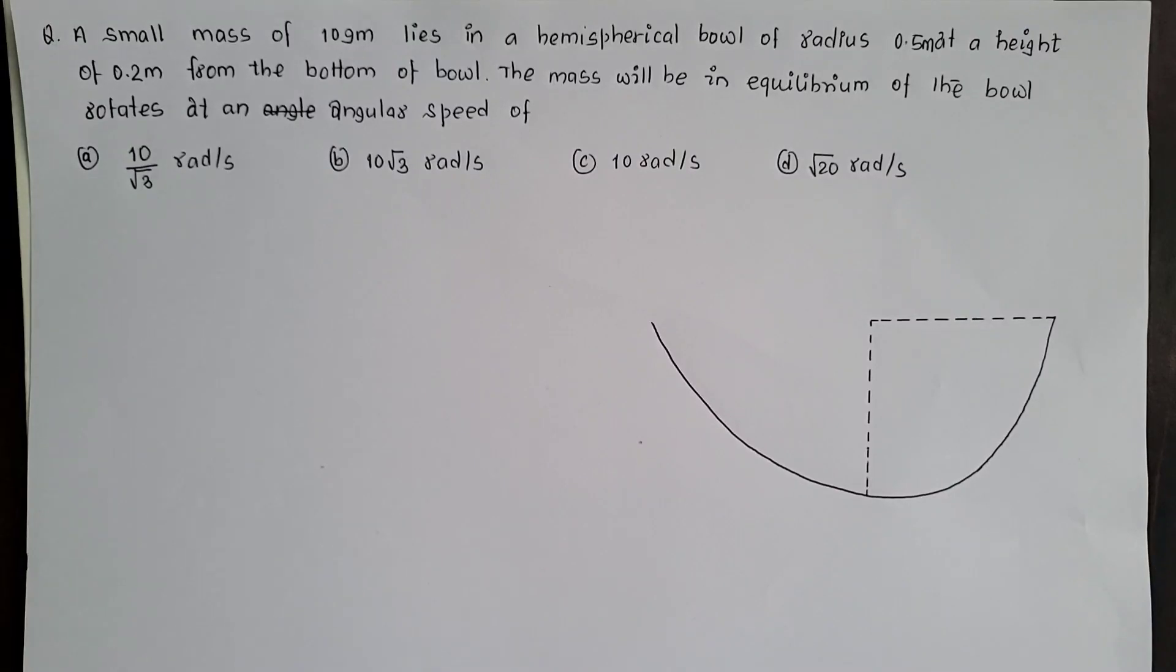Hello students, question liyakuchu, class 2 well, rotational dynamics product. A small mass of 10 gram lies in a hemispherical bowl of radius 0.5 meter at a height of 0.2 meter from the bottom of the bowl. The mass will be in equilibrium of the bowl rotates at an angular speed of...